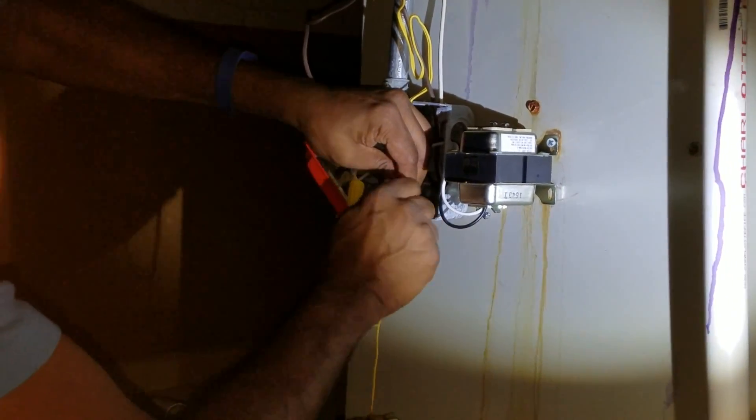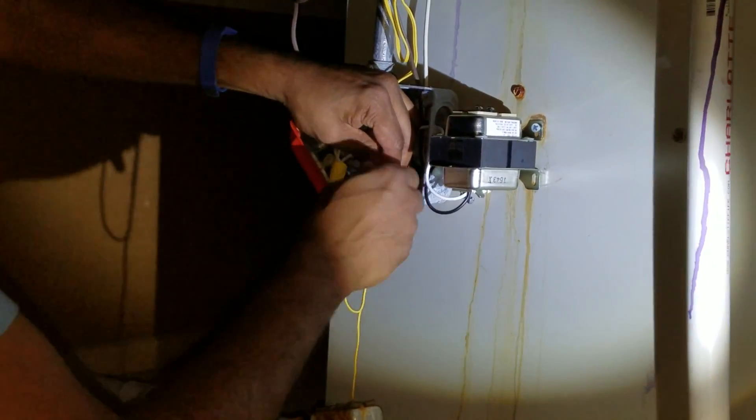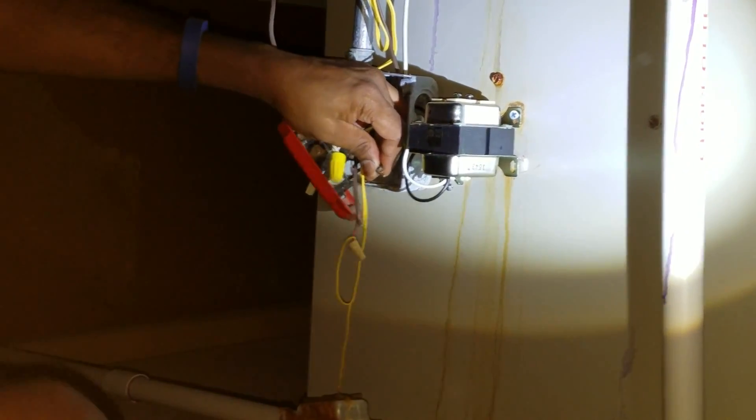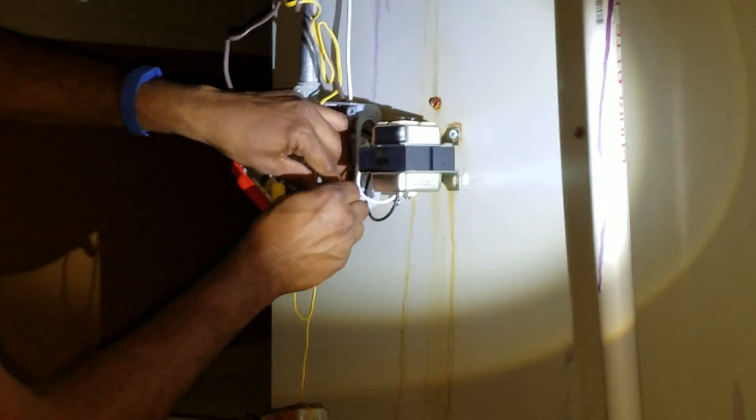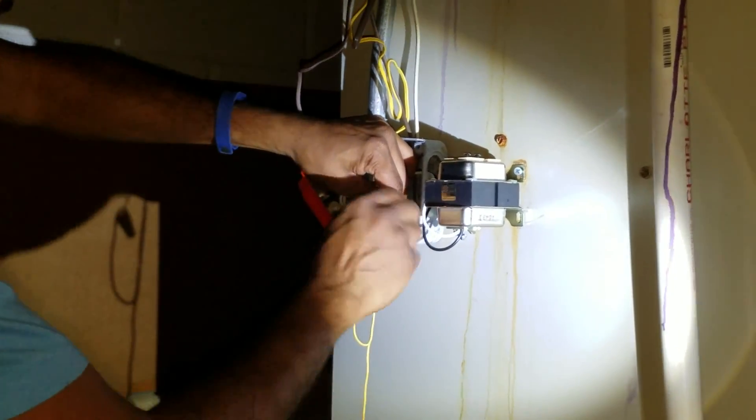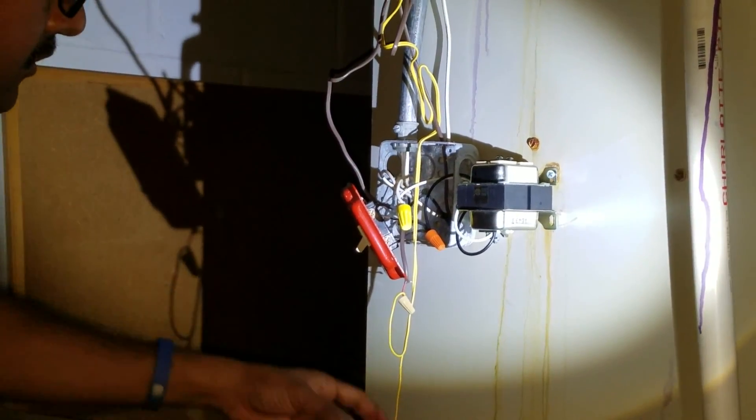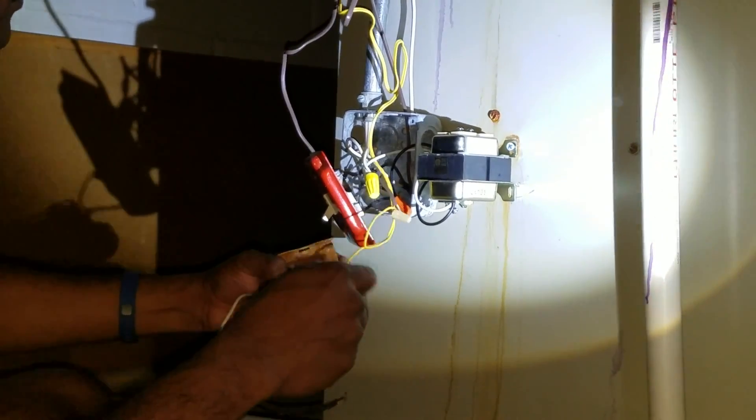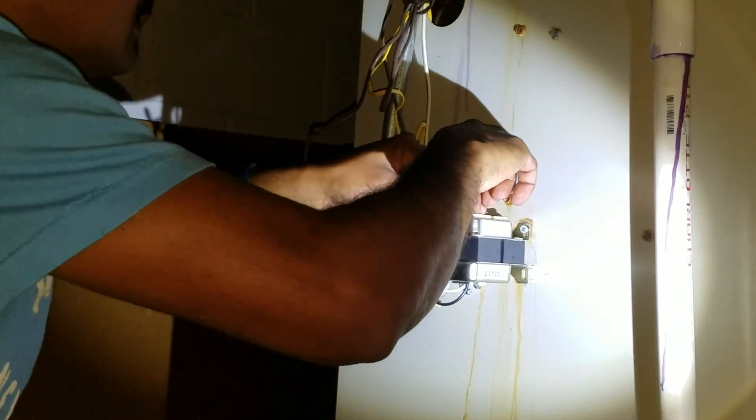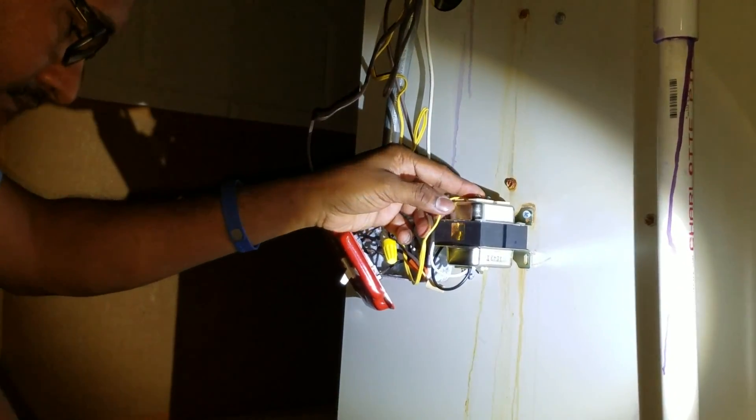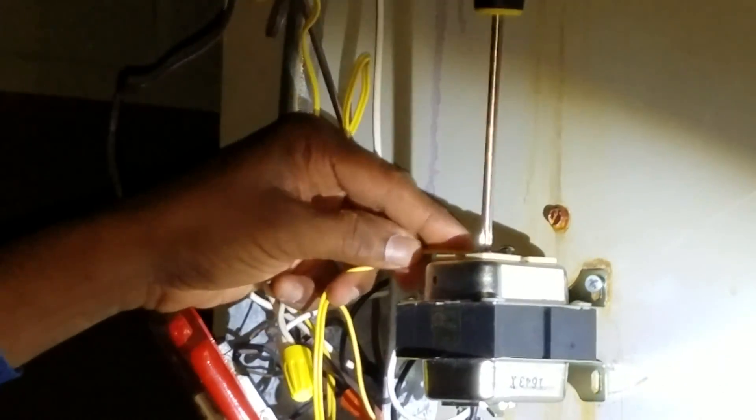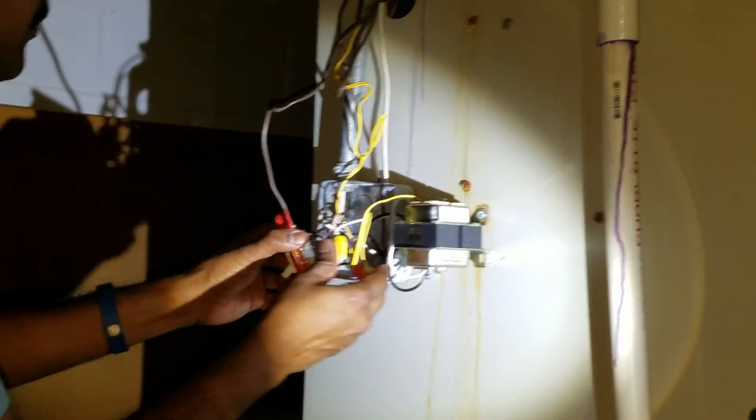Make sure that the connections are tight. Okay, so this is good. Now the load wire. Let me remove this load wire from the old transformer. It is on the load. So this will go here. And now the part is basically to replace the entire unit.